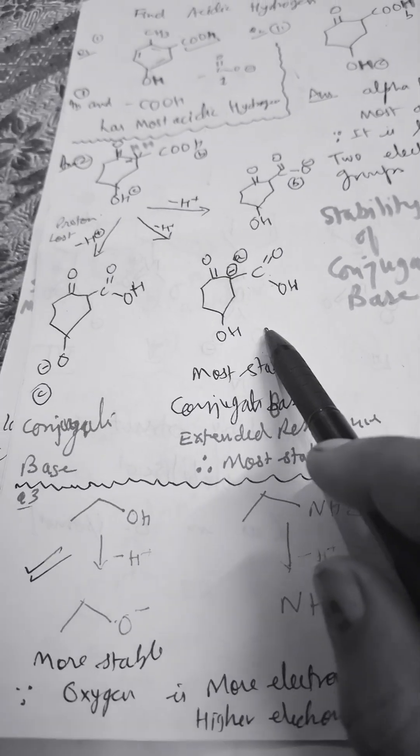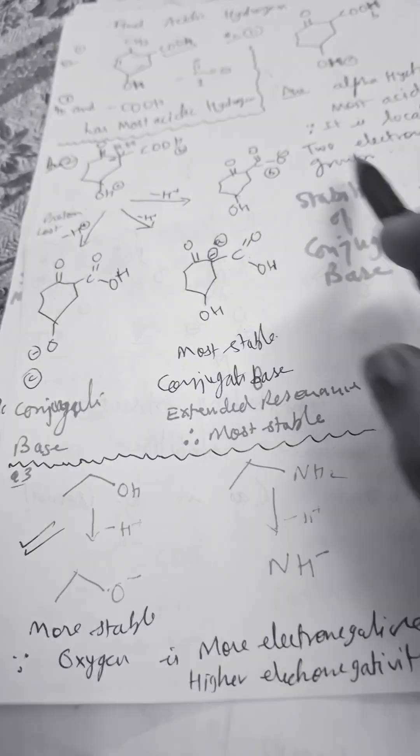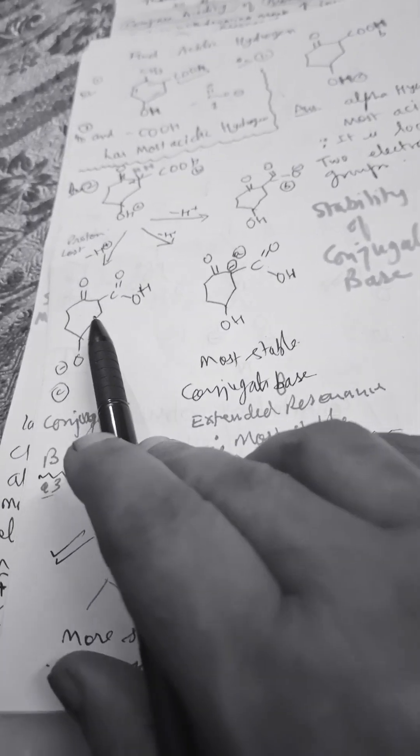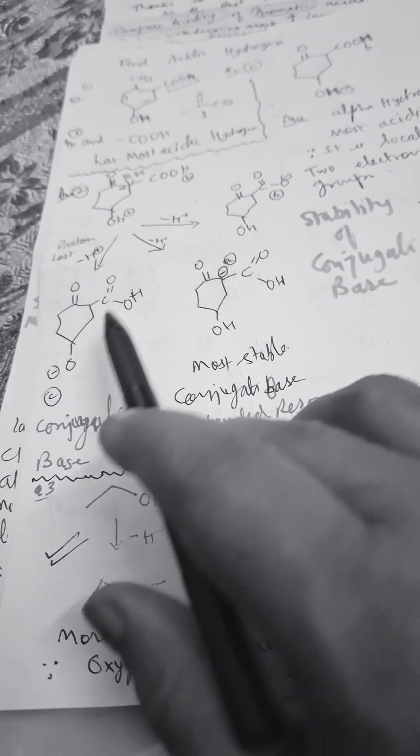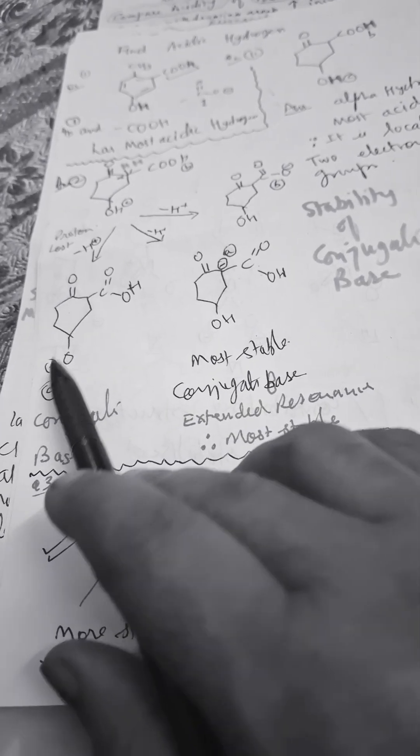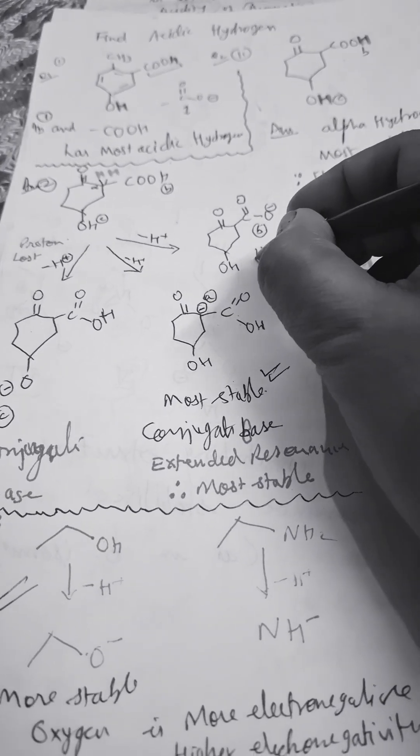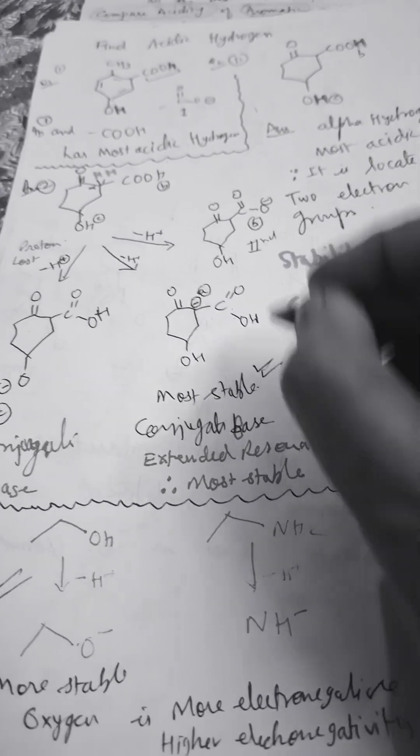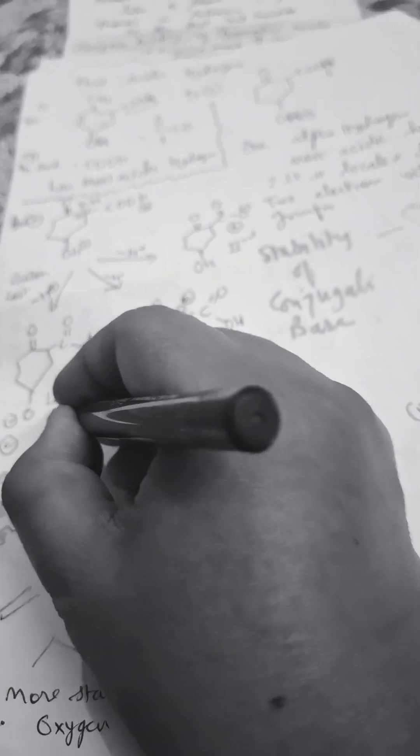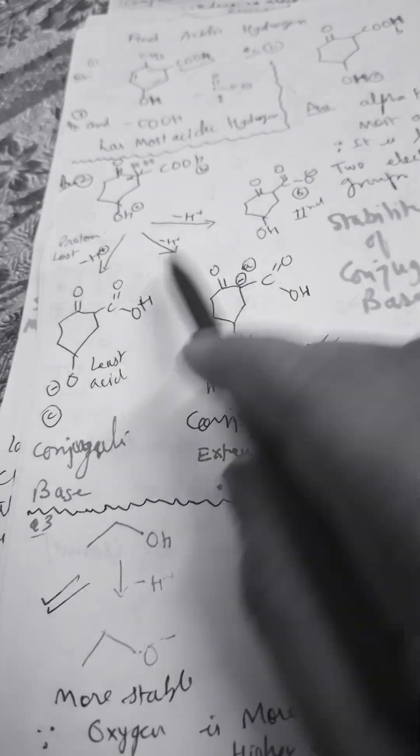This gets third priority. First priority is the most stable. Then b has second priority for most acidic, and this is least acidic. All of these are conjugate bases.